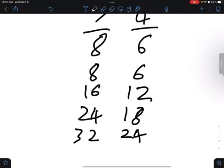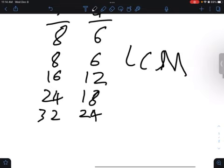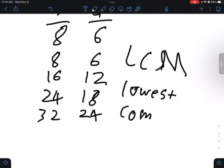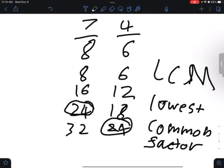And you find the LCM, which is also the lowest common factor. So in this case, 24 is our lowest common factor.